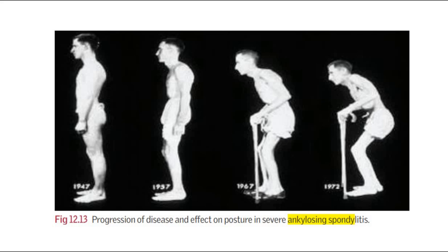This picture shows the progression of the disease and the effect on posture in severe ankylosing spondylitis. The disease causes variable progression, and a few progress to kyphosis, neck hyperextension, causing the question mark posture, and spinal cranial ankylosis. The person on the furthest right has the most severe ankylosing spondylitis.